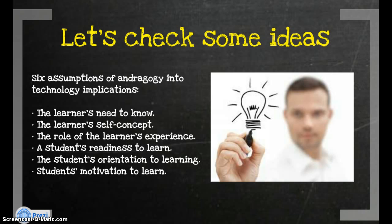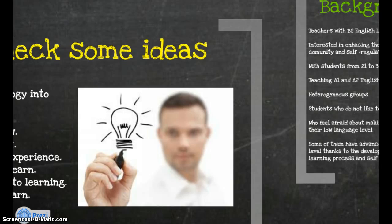Fifth is the student's orientation to learning. Adults are life- or task-problem-centered in their learning process. Sixth is the student's motivation to learn. Adults like to be rewarded through increased job satisfaction, self-esteem, and quality of life.